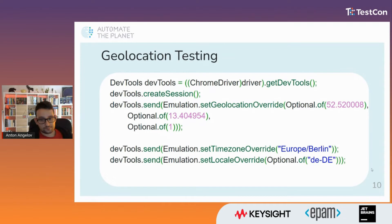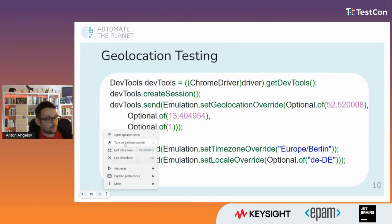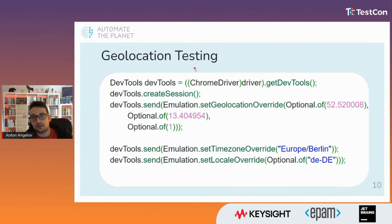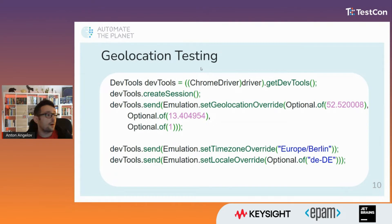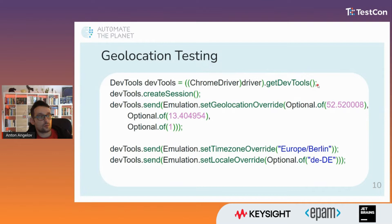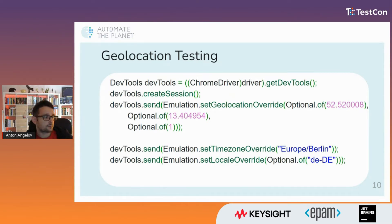Now, time for code. I'm going to use Java, but you can use it in any of the language bindings. In order to use DevTools with Selenium 4, you need to upgrade from Selenium 3 to Selenium 4. Next, you need to use ChromiumDriver — meaning ChromeDriver or EdgeDriver. These drivers have a method called getDevTools. Then you need to create a session, and after that you have the send method. Through the send method, we can send commands through the DevTools protocol, which are grouped in different domains.